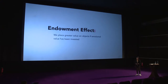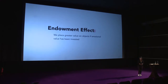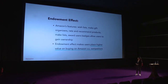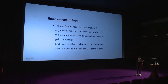The next pattern is the Endowment Effect, which is related to loss aversion but not quite the same. It means humans place a greater value on an object if they have invested emotional value in it. For example, Amazon has many features that allow users to engage with the platform and build up their profile — like wish lists, ratings, recommendations, lists, award badges, and so on. Because of these features, when a user goes to shop online, they prefer buying on Amazon because all their lists and information are already built there. It makes users place higher value on buying on Amazon versus a competitor.